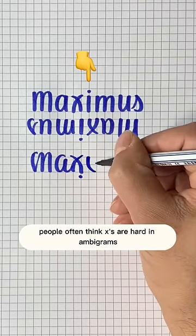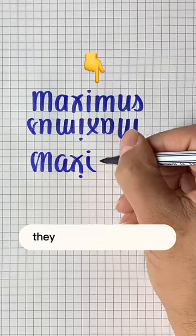People often think X's are hard in ambigrams, but when they're broken down into downstrokes, they become pretty easy.